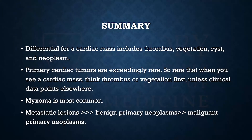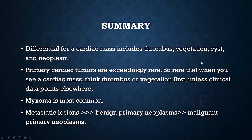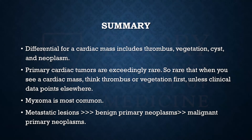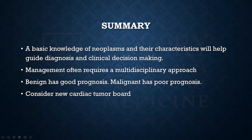In summary, your differential for a cardiac mass includes thrombus, vegetation, and neoplasm. Primary cardiac tumors are exceedingly rare — think thrombus or vegetation first. Myxoma is the most common primary cardiac tumor, and metastasis is much more common than any primary tumor. Malignant primary tumors are extraordinarily rare. This knowledge of neoplasms will guide your diagnosis and clinical decision-making, helping you manage these patients appropriately.